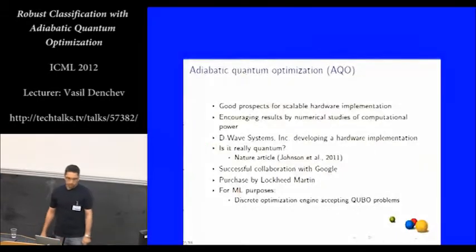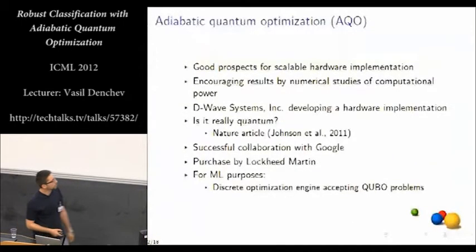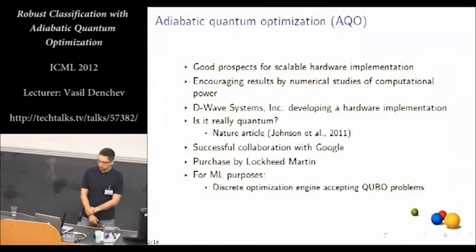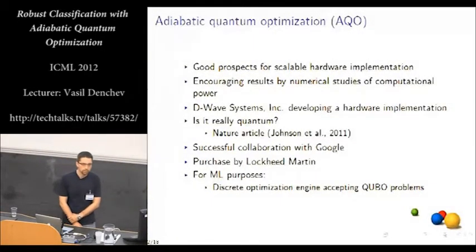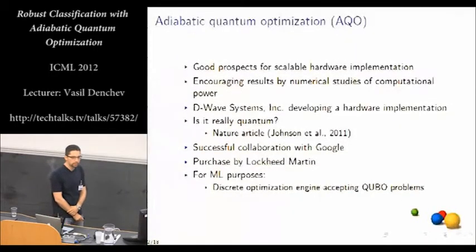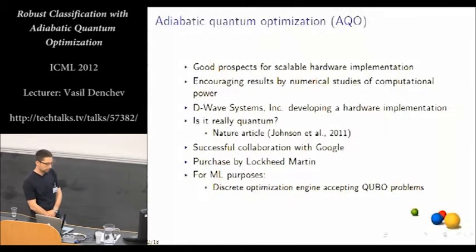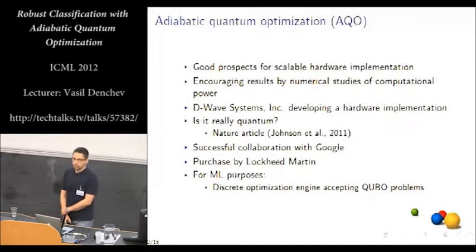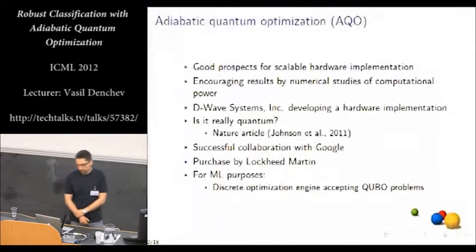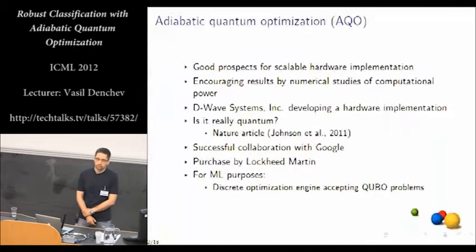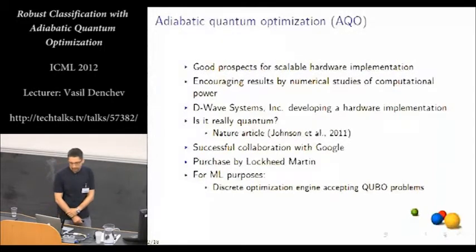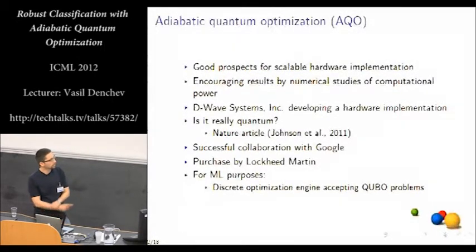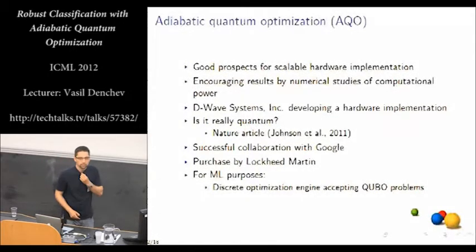So first, I'll give some background about adiabatic quantum optimization. AQO is one of the quantum computing models with the best prospects for scalable hardware implementation. There have been some encouraging results about its computational power. And there is actually a company called D-Wave Systems that's developing a hardware implementation of this quantum computing model. There have been some questions from the academic community over the years whether the hardware that D-Wave manufactures is really quantum. And there is a very nice Nature article from last year that studied the quantumness of the D-Wave devices.